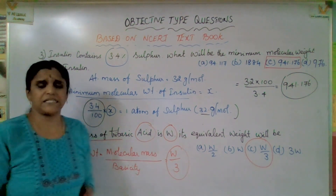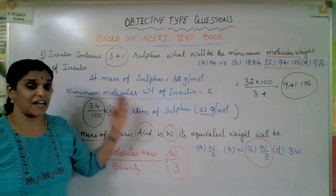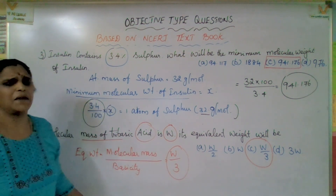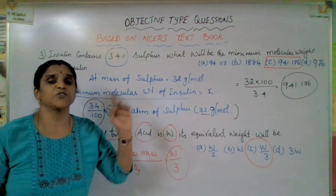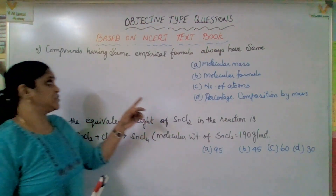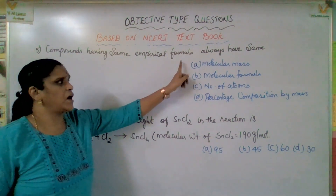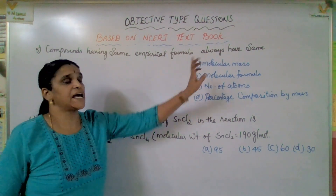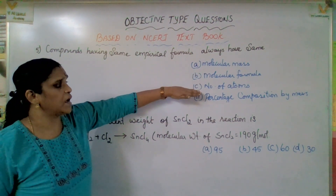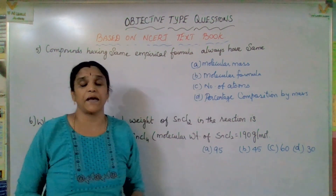This is a very simple question, but there is a logic. We have to find that logic only. If you know the formula, it will be easy to crack these sums. The next question: compounds having the same empirical formula always have the same — molecular mass, molecular formula, number of atoms, or percentage composition by mass?